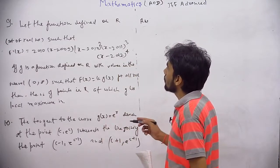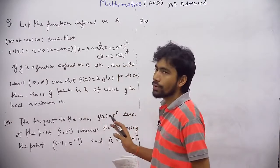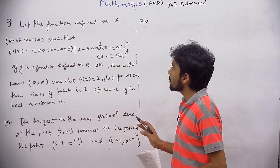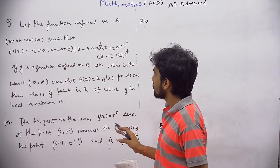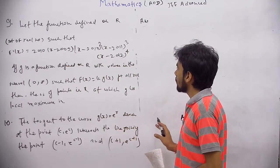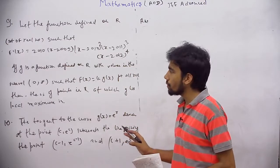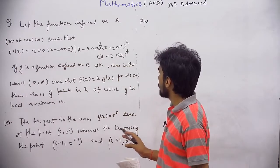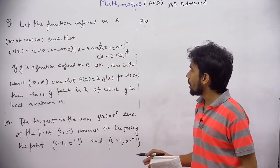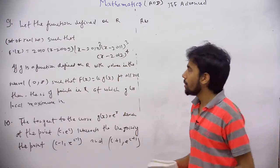Let the function defined on R. R is a set of real numbers such that f'(x) is equal to the given function, and g is a function defined on R with values in the interval 0 to infinity such that f(x) equal to g(x) for all x element of R. Then the number of points in R at which g has local maximum.